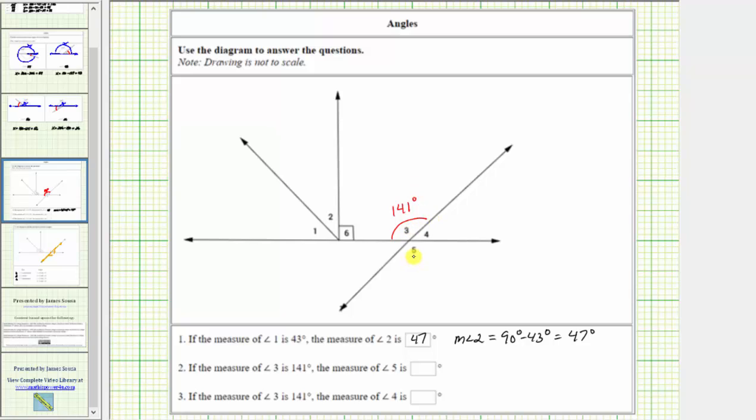Notice angle 3 and angle 5 are vertical angles, which are opposite angles formed by two intersecting lines. Vertical angles always have the same measure, which means the measure of angle 5 is also 141 degrees. So we enter 141.